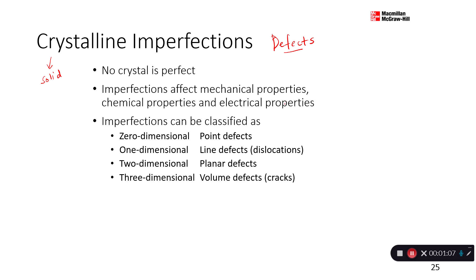There are four classifications of crystalline imperfections and they are classified in terms of the dimensions that they exist in. We have zero-dimensional defects, also called point defects — zero D is just a point. We have one-dimensional defects, where the defect is happening in just a line. We have 2D defects, called planar defects, where the defects are happening on a plane. And then we have 3D defects, where it's happening in a whole volume.